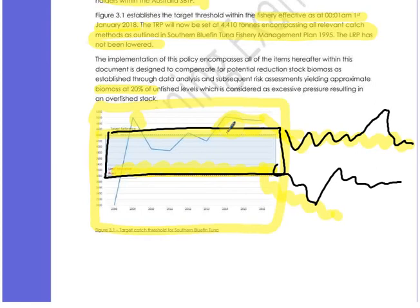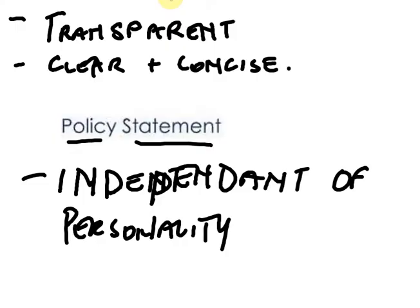Just remember that the policy statement needs to be transparent, clear, concise, and independent of personality. And it needs to be real — it needs to be managing something that is a real thing. I don't say I'm going to manage a biomass decrease with a quota control when there's no need to do it. In this example, a lot of fishery scientists say the current state of the fishery is on the increase — from 3% to 15 or 18%. The achievement is to try and reach 20% of virgin biomass by 2035. So I'm only using this as an example; I'm not trying to override what other fisheries managers are already doing.